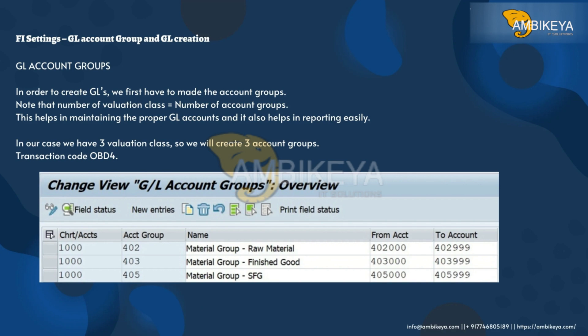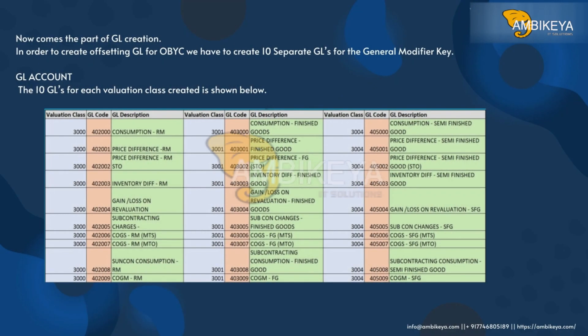Transaction code OBD4 is used to create account groups. Now comes the part of GL creation. In order to create offsetting GLs for OBYC, we have to create 10 separate GLs for the general modifier key GL account. The 10 GLs for each valuation class created are shown below.